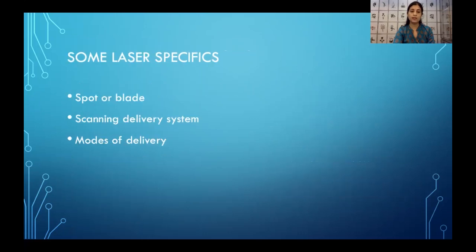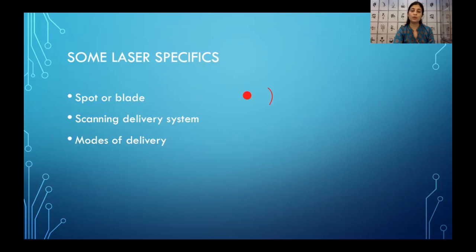Some specifics about the laser include whether the cutting edge is a spot or a blade. During surgery, the micromanipulator can change the shape from a spot to a straight line, to a blade, to an arc which can be curved right or left — allowing you to go as close to the lesion as possible. You can shape the laser knife just like you would a scalpel, and it allows us to use it for the mini-microflap technique.